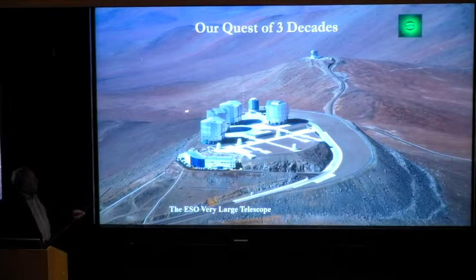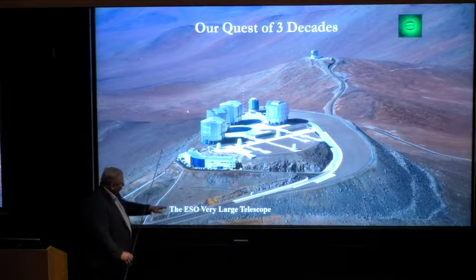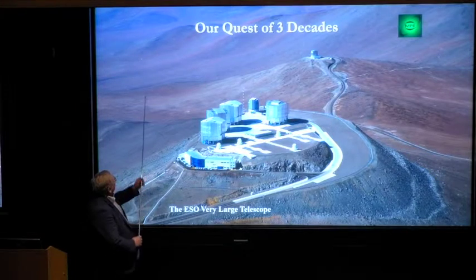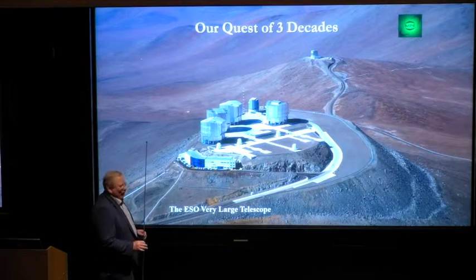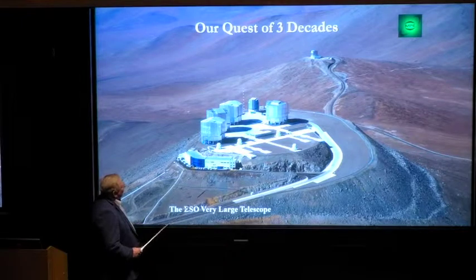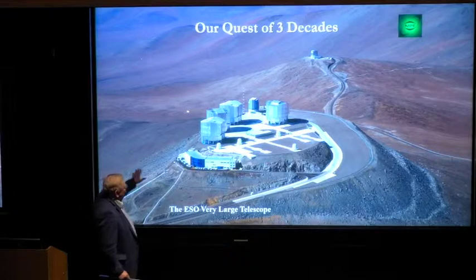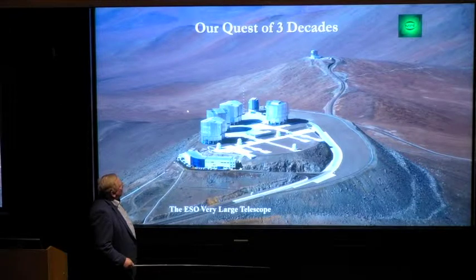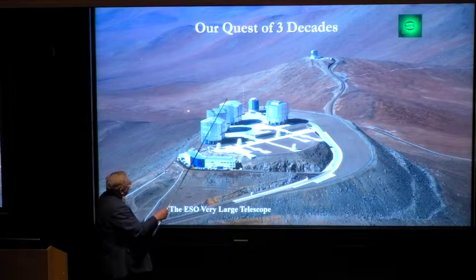Our quest of three decades used this facility, which is ESO, the European Southern Observatory, very large telescope. This is in the Atacama Desert. That's a real desert. There is nothing which grows there. And so this is at 2,600 meters altitude right next to the ocean. The ocean is only 15 miles away. So there's a very laminar flow, very good seeing, and incredible good conditions for clear skies. You see there are four telescopes up there, four eight meter telescopes.